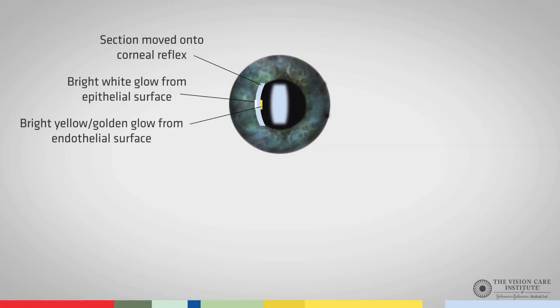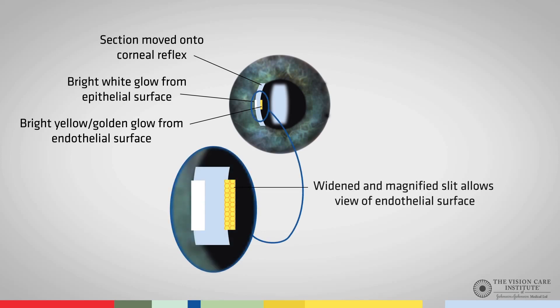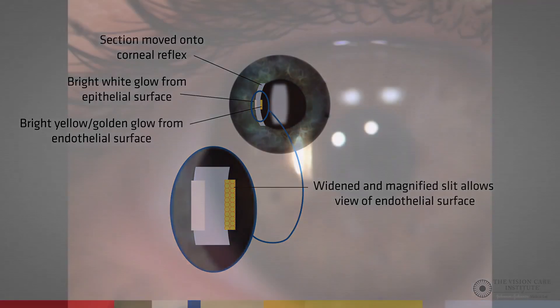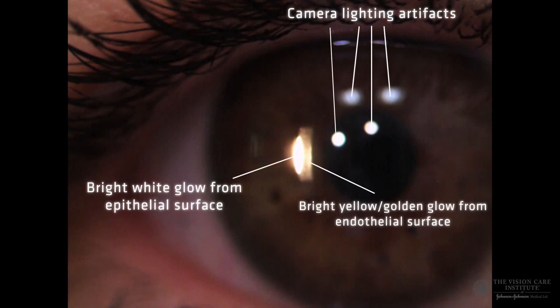Here, we can see the diagram of what we have achieved. We have a section that has been moved onto the Purkinje image, and we can see how the epithelial and endothelial surfaces are glowing. What we need to do is to look at the endothelial surface in detail, while ignoring the bright epithelial surface on the left. Here, we have the endothelial surface in focus, and it's very important to try and keep the corneal section nice and sharp, as that will help ensure we focus on the endothelial surface.